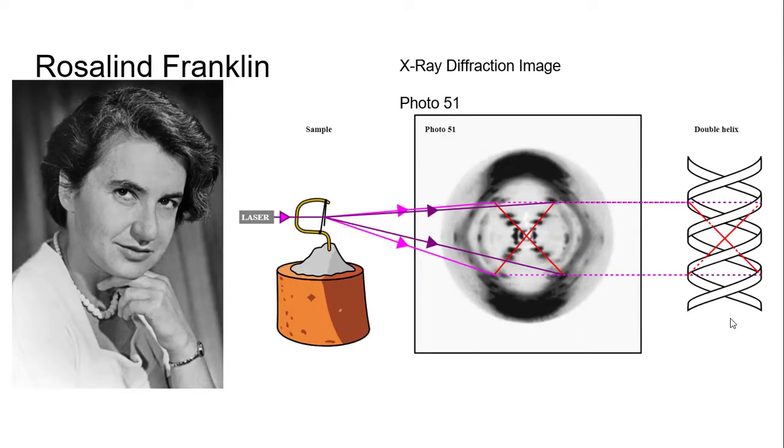He worked with Rosalind Franklin. In fact, what they used is this picture here, the famous Photo 51. They used X-ray diffraction imagery to shoot lasers at DNA, and it came up with this pattern which showed that it was a double helix.